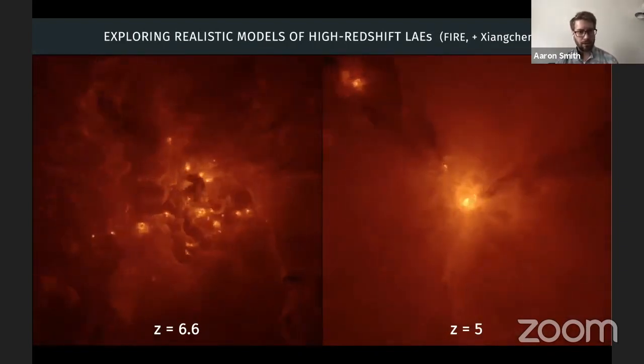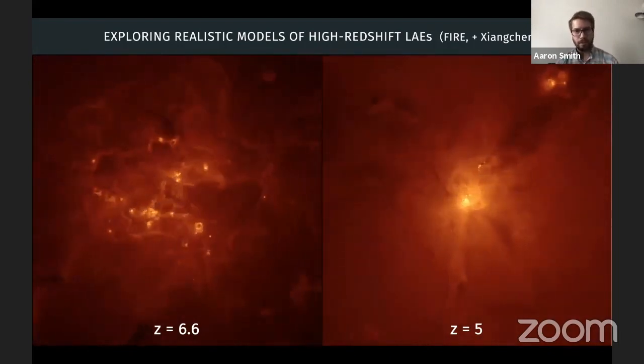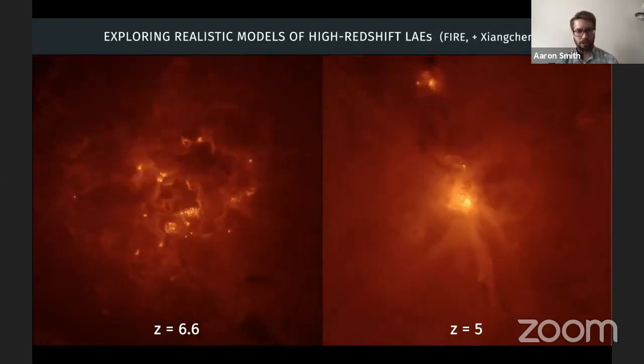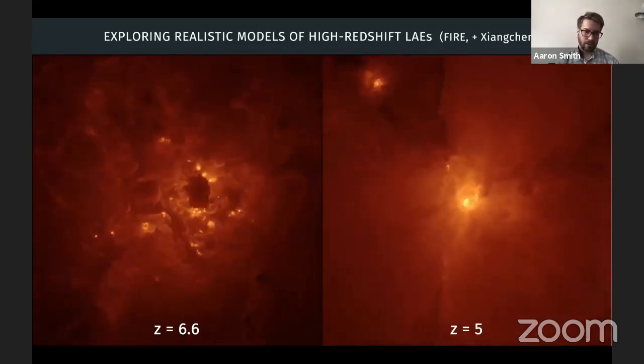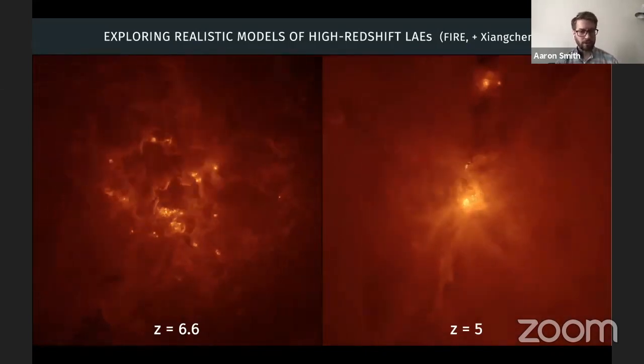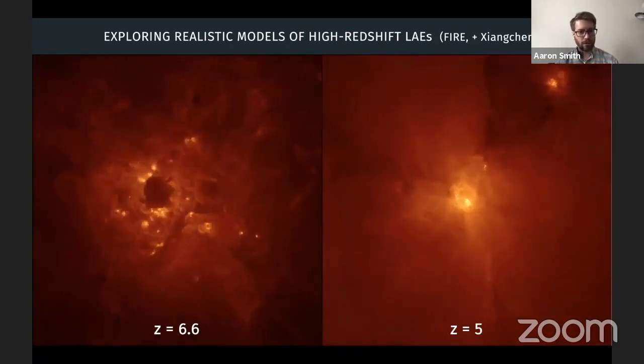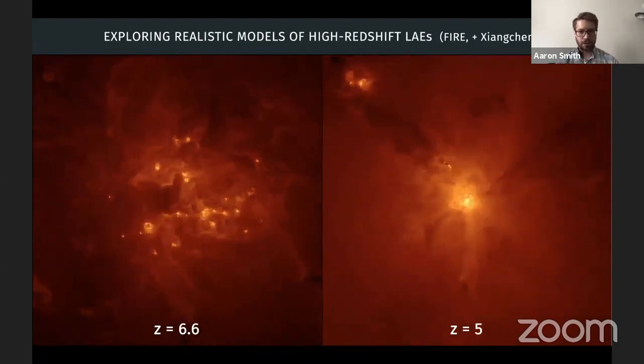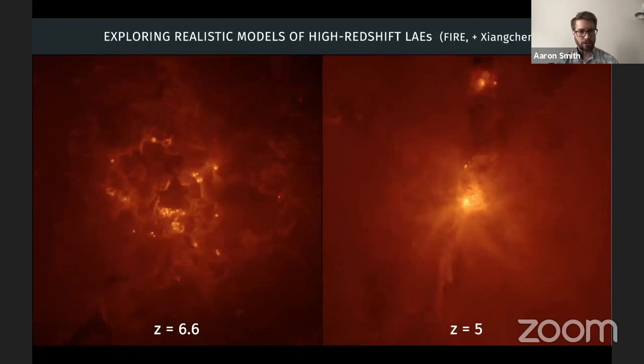But I want to emphasize that these simulations do exist for a number of groups. So this is an example from the FIRE simulations, which is work I did with Zheng Zheng Ma. So this sort of illustrates the morphologies of this. This is the same galaxy, just different redshifts, where the star formation is sort of clustered and bursty and then settles down to a more compact region.